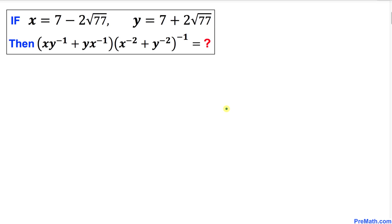Welcome to Pre-Math. In this video tutorial, we have this problem where x = 7 - 2√77 and y = 7 + 2√77. We are going to calculate the value of (xy⁻¹ + yx⁻¹)(x⁻² + y⁻²)⁻¹.